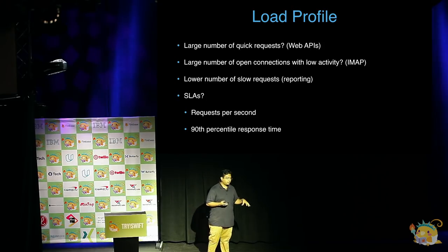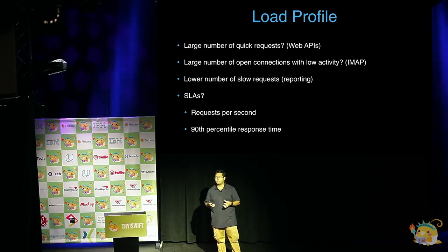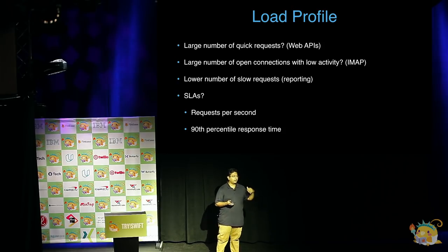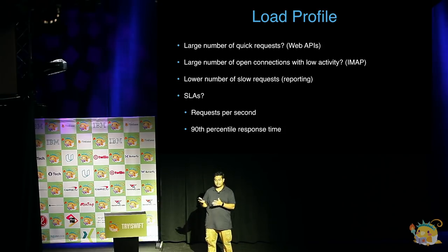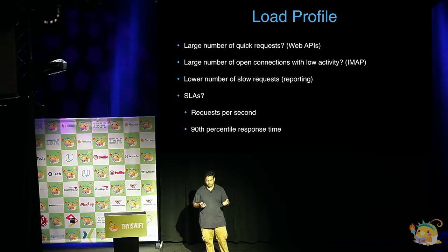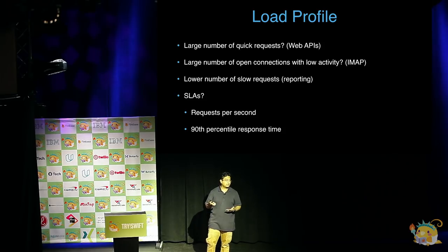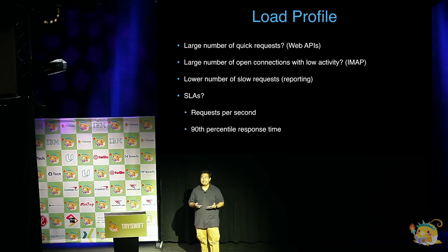Another thing a lot of people miss is setting expectations of what your web service is supposed to do — SLAs, service level agreements. Things like: I'm going to handle X requests per second on one unit of deployment, say one AWS instance. This way you know whether you're succeeding or failing and can correspondingly adjust. Another common one is a 90th percentile response time, or even a 99th percentile if you're really concerned about your long tail.